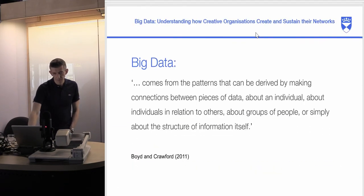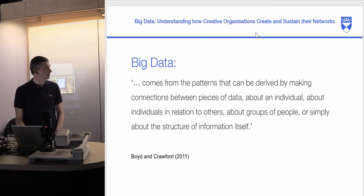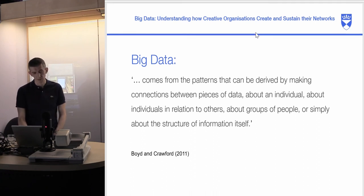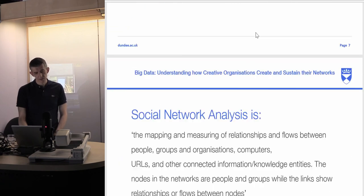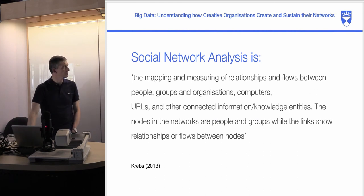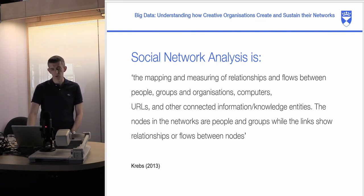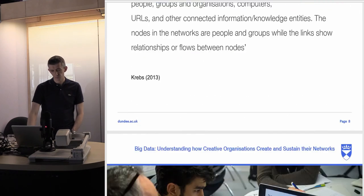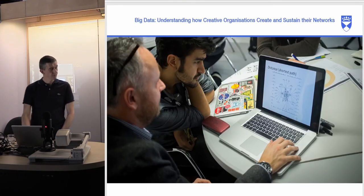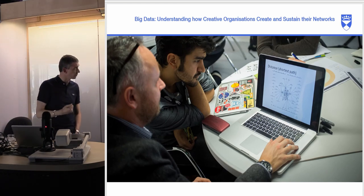Big data comes from patterns derived by making connections between pieces of data about individuals, individuals in relation to others, groups of people, or simply about the structure of information itself. Social network analysis is the mapping and measuring of relationships and flows between people, groups, organizations, computers, URLs, and other connected information entities. The nodes in the networks are people and groups, and the links show relationships or flows between those units.